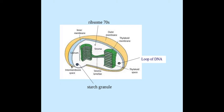Now inside the chloroplast, it has the liquid inside, which is known as the stroma, and it also has inside there these folded thylakoid membranes, and they form these pancake stacks called grana — granum being the singular.